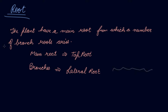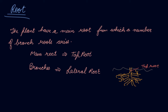Now, let's suppose this is soil. This is the main root starting from here, and it has different branches. This kind of root found inside the soil — the main root is known as the tap root and these branches are known as lateral roots.